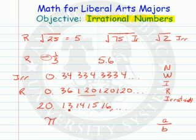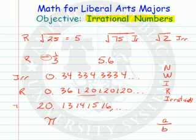0.13, 1, 4, 1, 5, 1, 6 — you can see a pattern, but there is no block repeating. Irrational number.